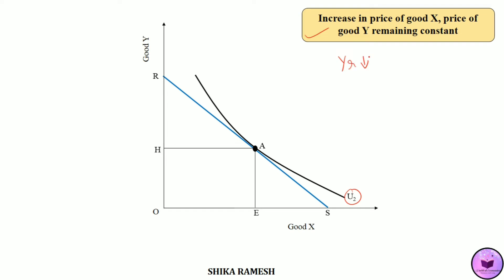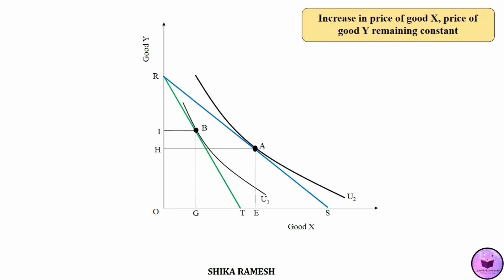It means the consumer is in a worse off situation because his purchasing power has decreased. So that decrease in real income is shown by the RT budget line — there has been an inward shift in the budget line from RS to RT. In this new budget line, the consumer again reaches equilibrium at point B, now at a lower utility level U1, due to the increase in the price of good X.